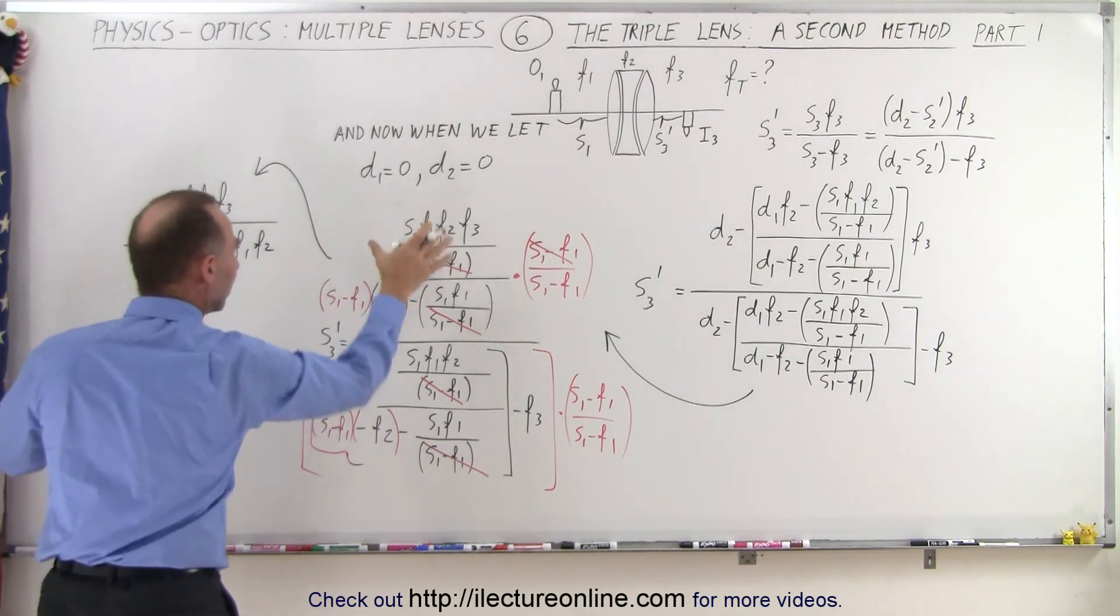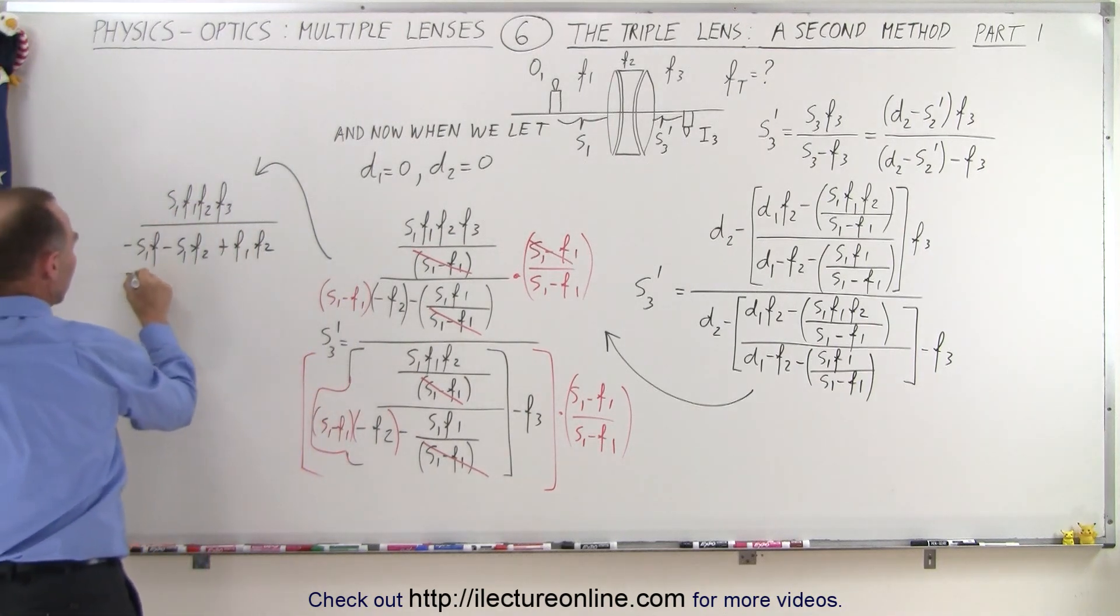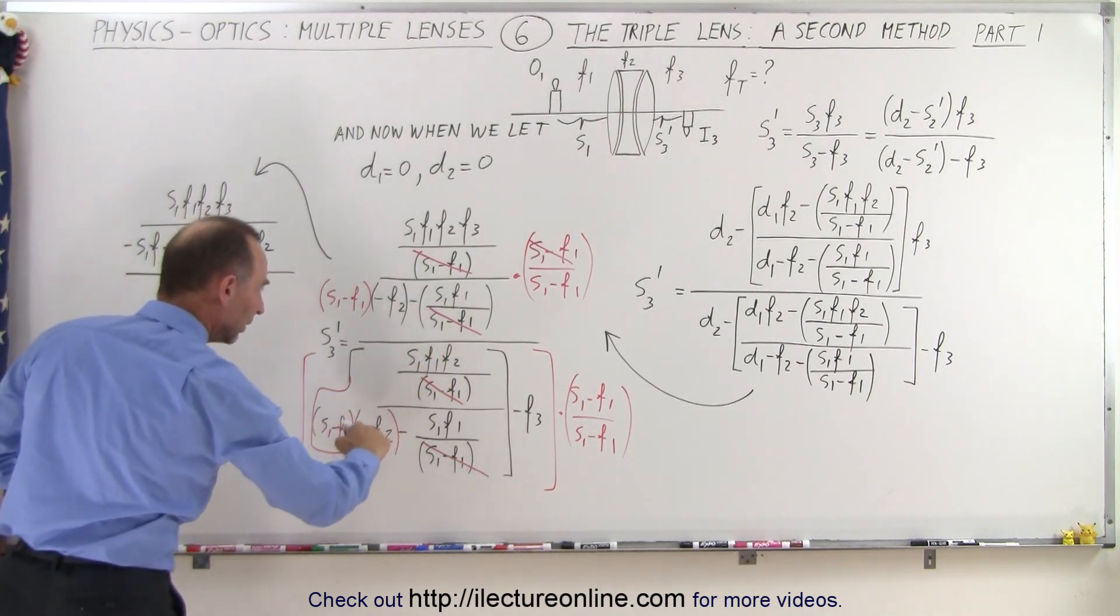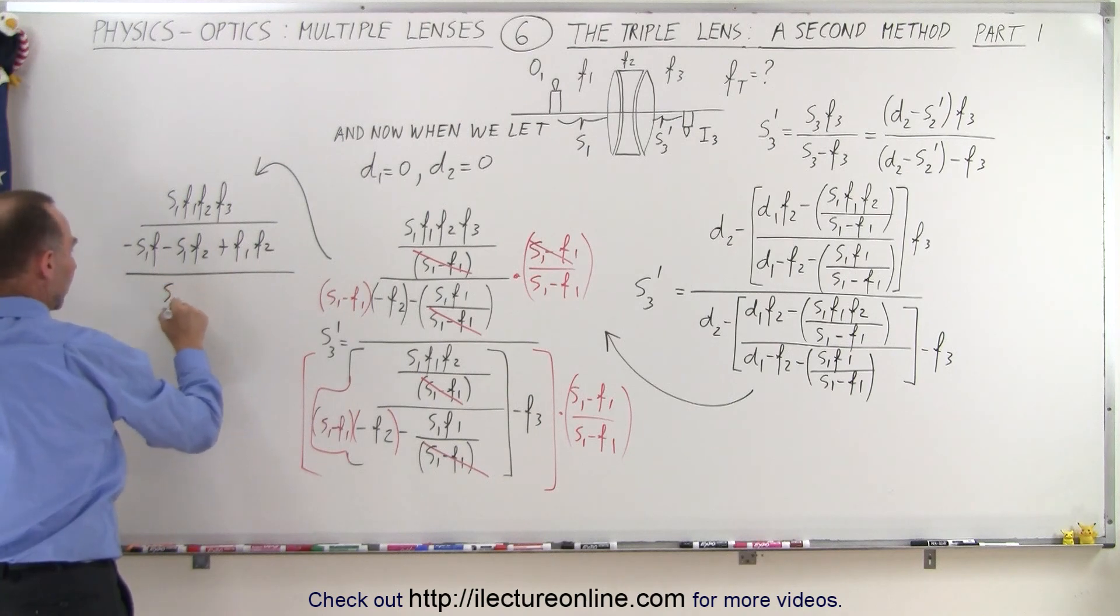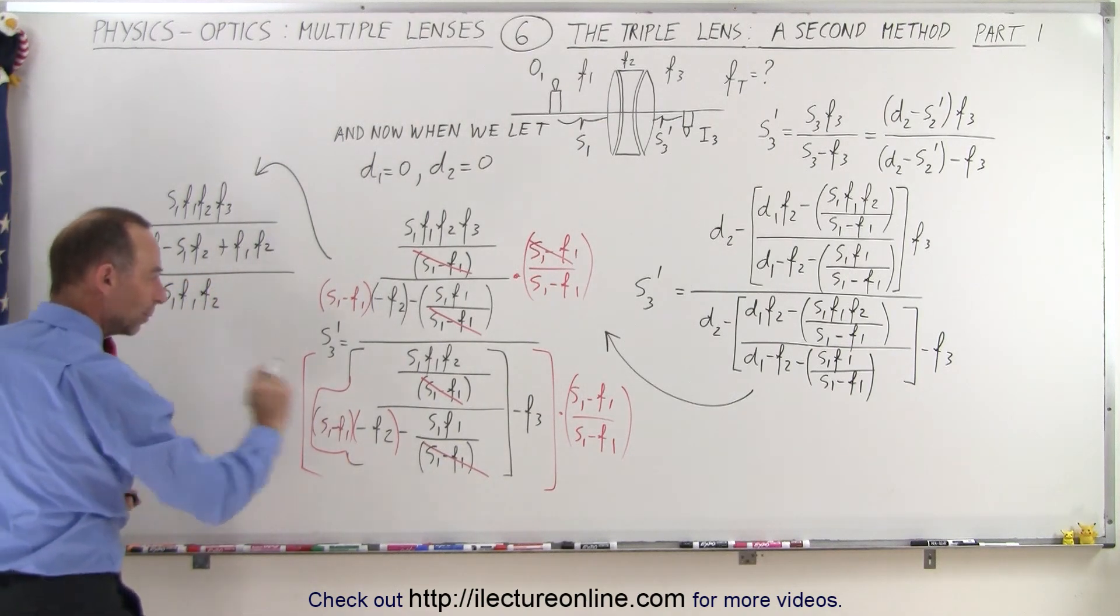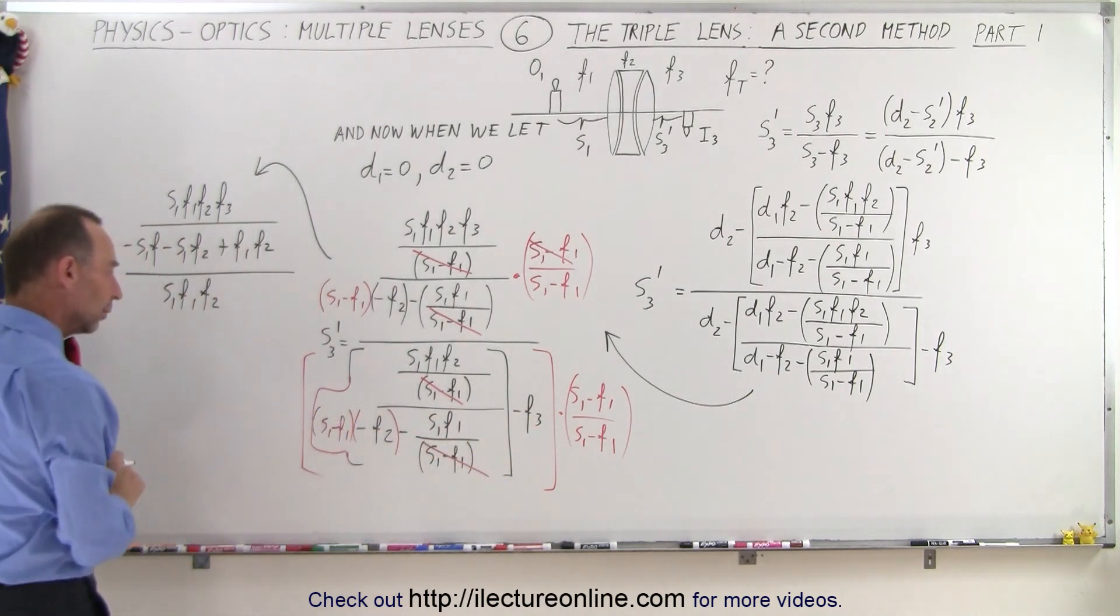So we have the numerator, we have the denominator, we divide that by, here in the numerator, we have an S1, F1, F2. Let's see, we'll leave the minus F3 alone for a moment.